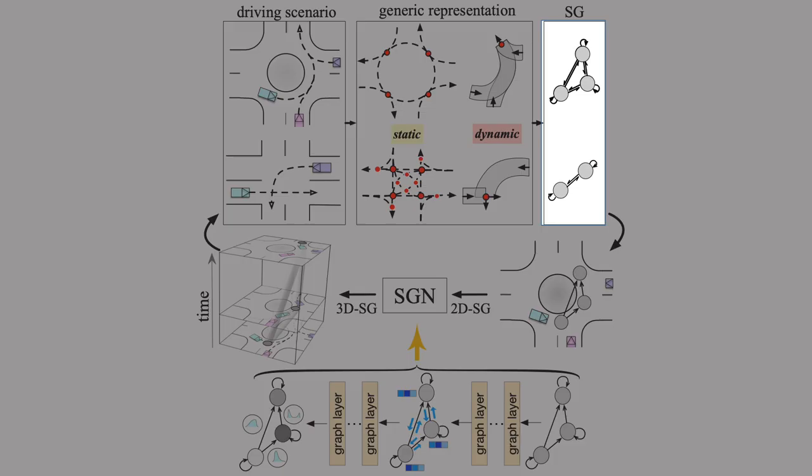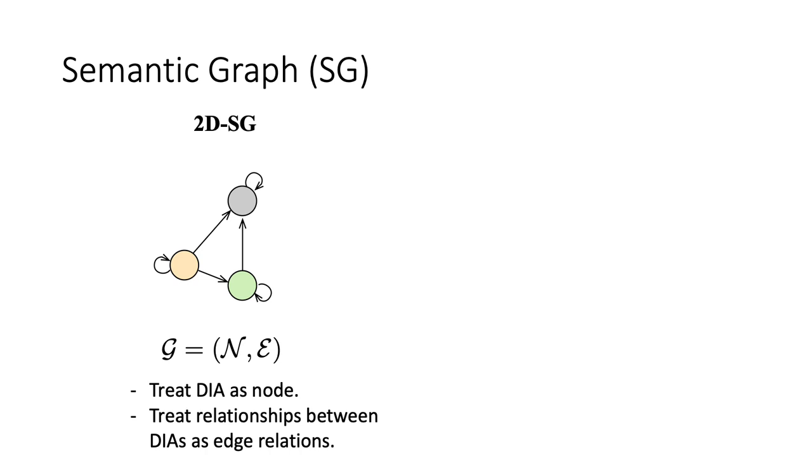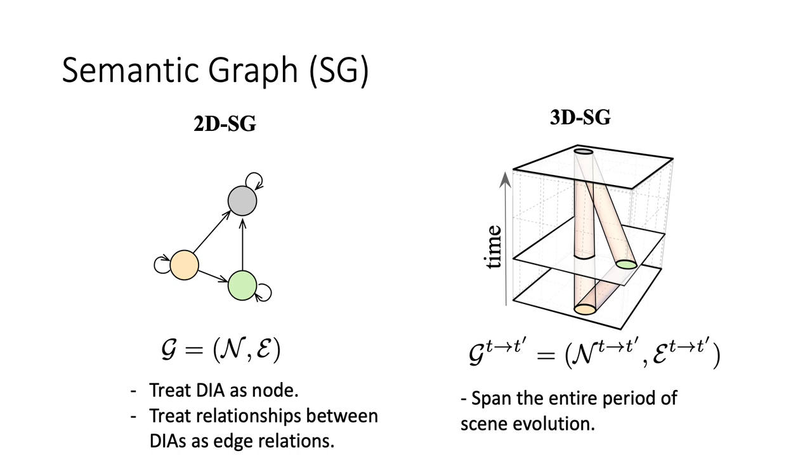Now let's see how semantic graphs are defined. Semantic graphs are used to describe structural relations among dynamic insertion areas. The definition of two-dimensional semantic graph is similar to that of the traditional graph. However, here we treat DIA as node attribute. The three-dimensional semantic graph, on the other hand, spans the entire period of scene evolution, and the information it contains can be used to describe possible future outcomes.